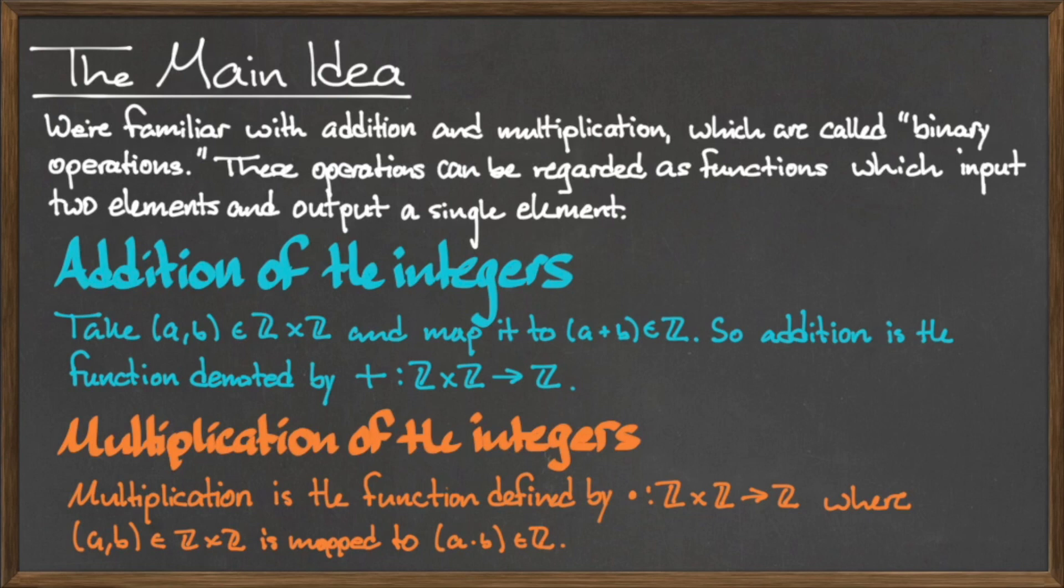In terms of a binary operation, we can view integer multiplication as the function · from Z × Z to Z.